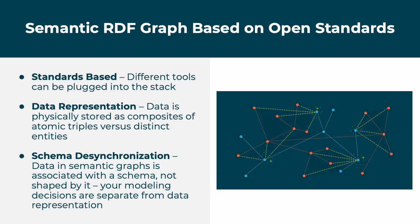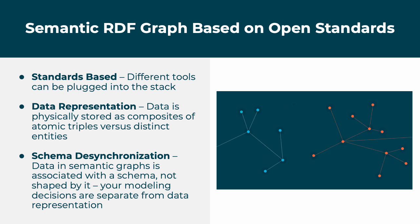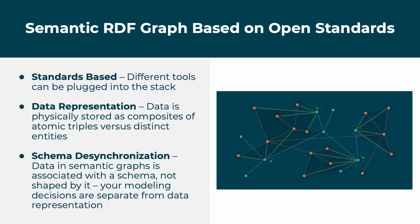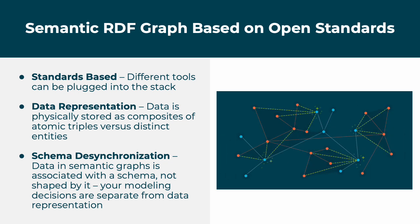Stardog as a semantic RDF graph also supports schema desynchronization, meaning your data model is separate from your data. This allows Stardog to support schema multi-tenancy, meaning you can create multiple schemas which represent the same data differently. A lot of our users ask about label property graphs (LPGs) and how they are different from RDF graphs. RDF graphs keep data separate from your business logic by representing data as atomic triples and schema desynchronization.